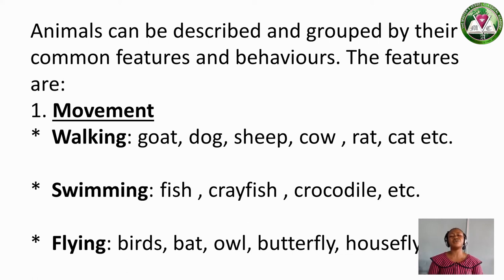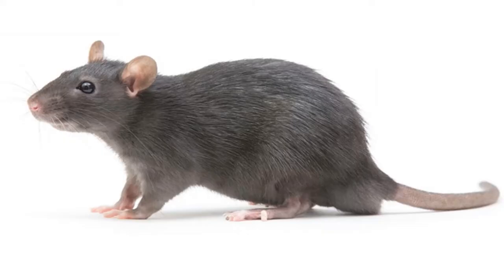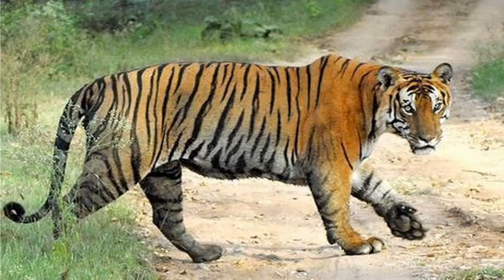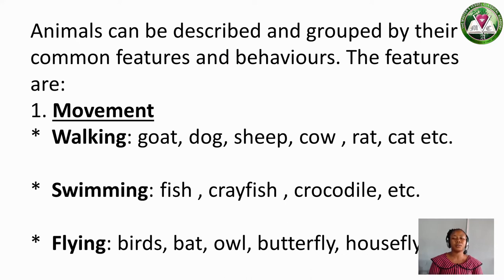Animals can be described and grouped by their common features and behaviours. Animals can be grouped by the way they move. The first way is Walking. Now let's know the animals that move by walking. We have goat, dog, sheep, cow, rat, cat — many of them, both domestic and wild animals. We have lion, tiger, elephant, and so on.